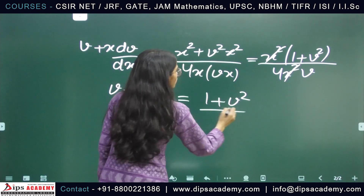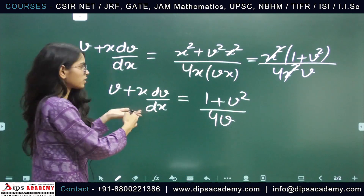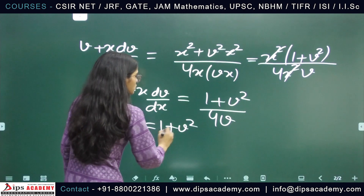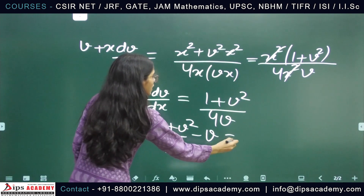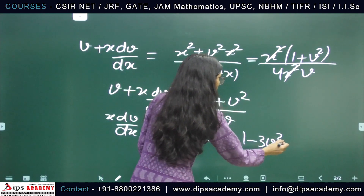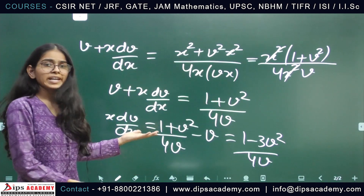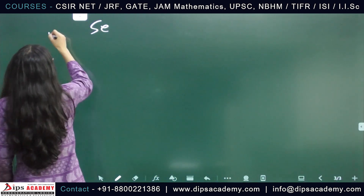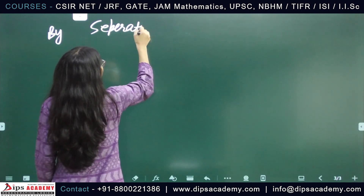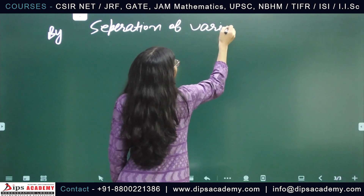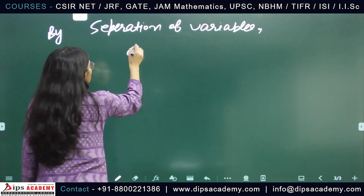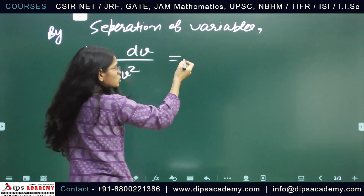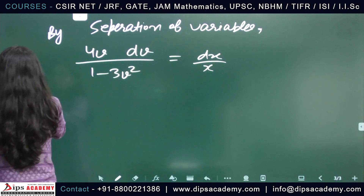Rearranging: x dv/dx = (1 + v²)/(4v) − v = (1 − 3v²)/(4v). Now we can separate the variables. Applying the method of separation of variables, we get 4v dv / (1 − 3v²) = dx/x.